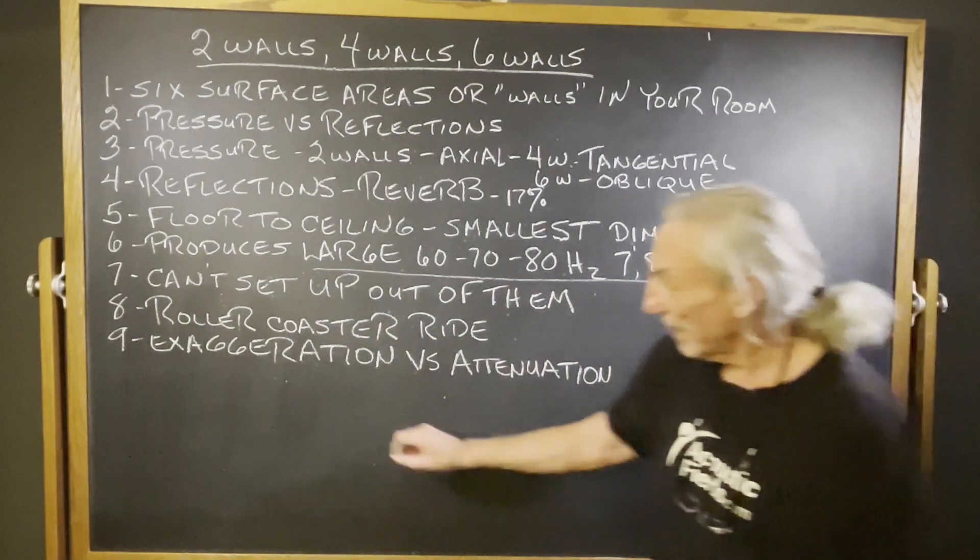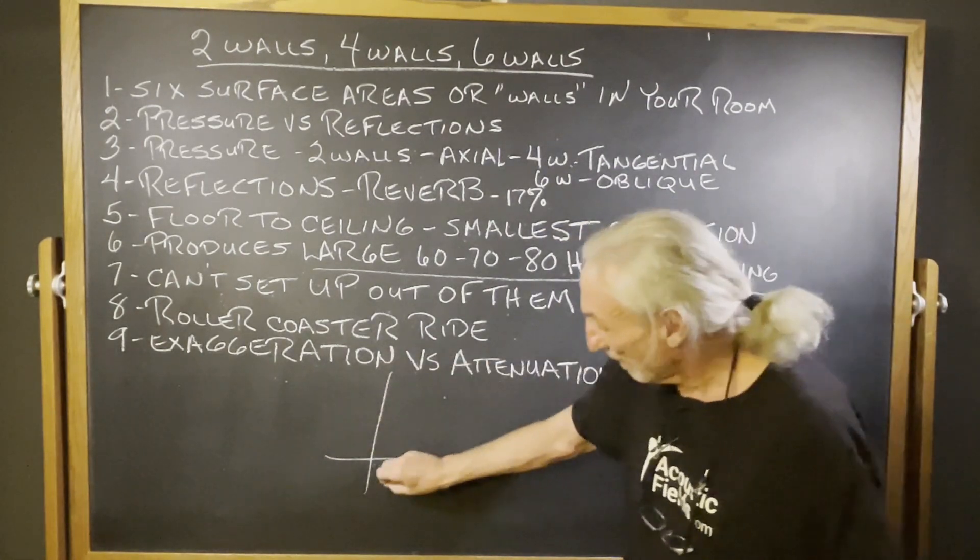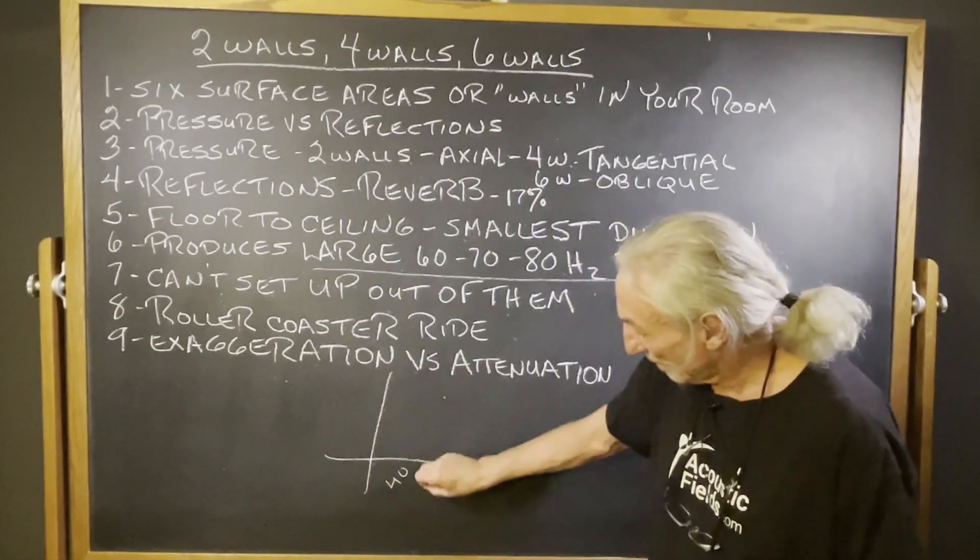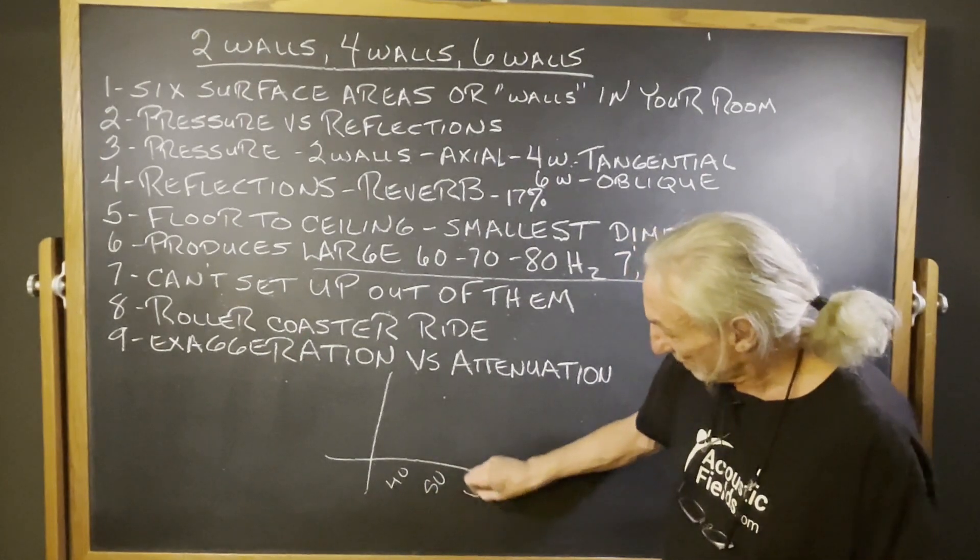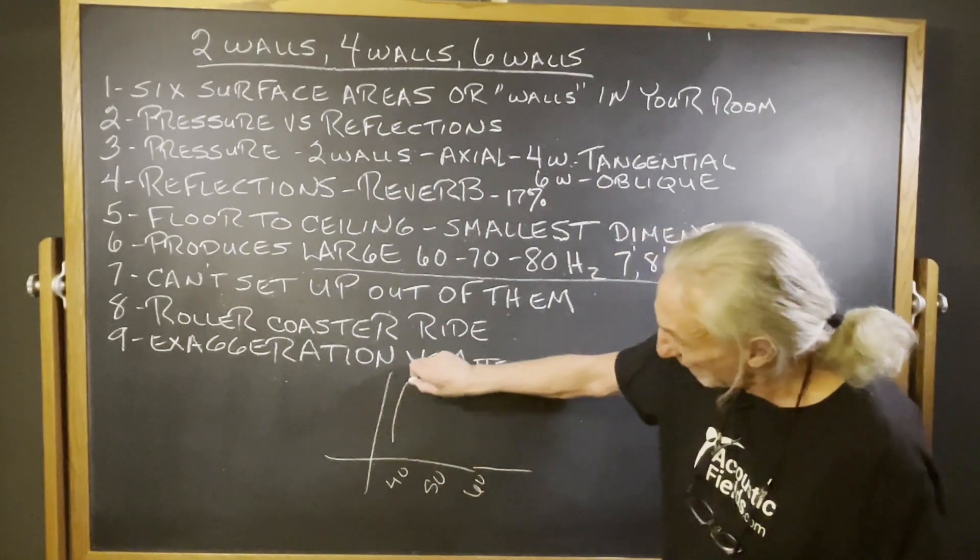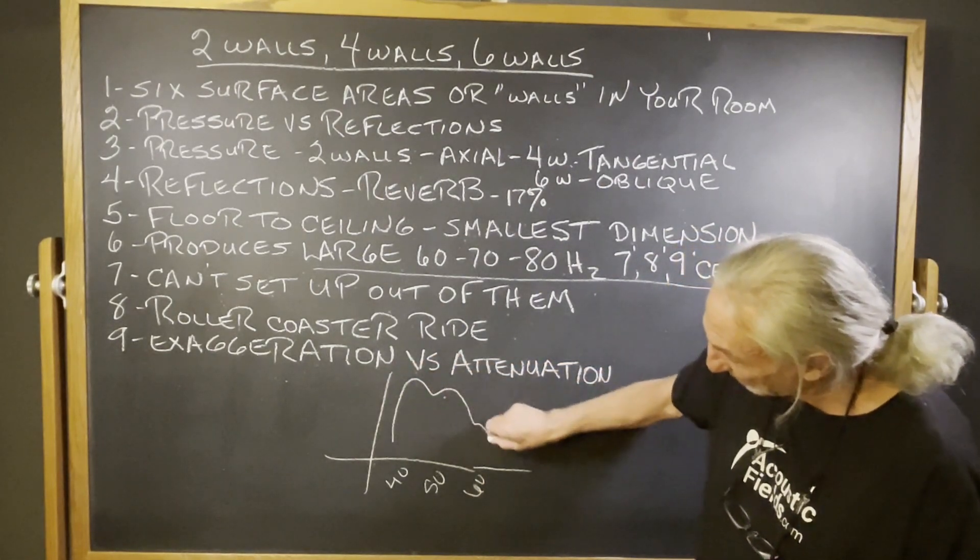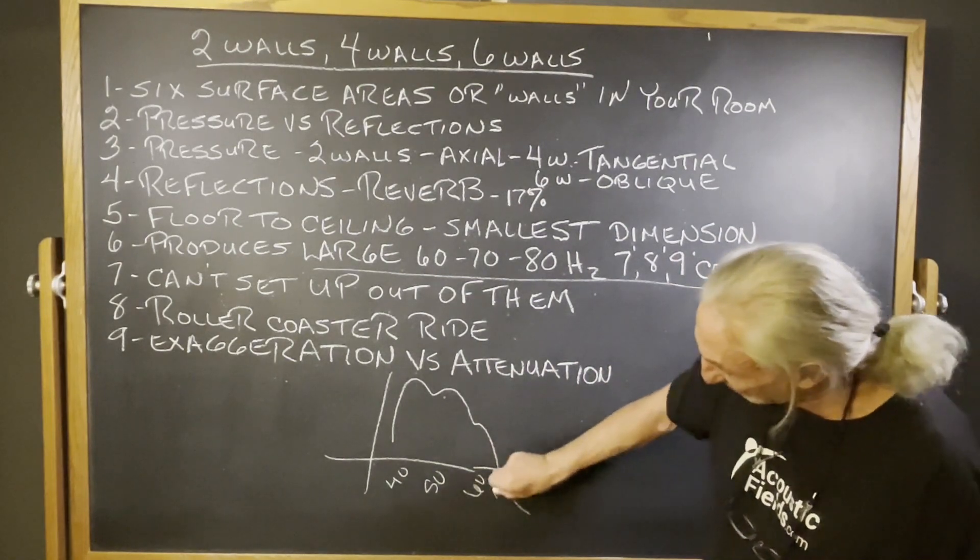So you get that roller coaster ride. Let's look at our baseline here. So we get 40, 50, 60. So we'll usually see these small rooms, big peak, 40, maybe a little less than 50, might go up again, 60. And then it starts to slide in the 60, 70,